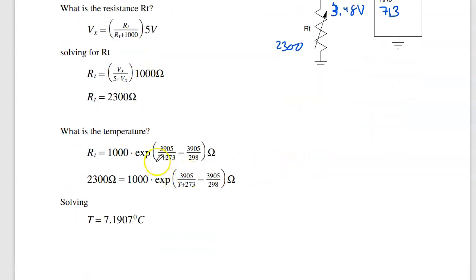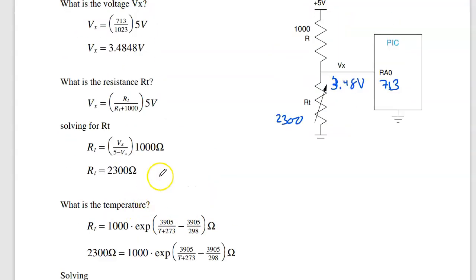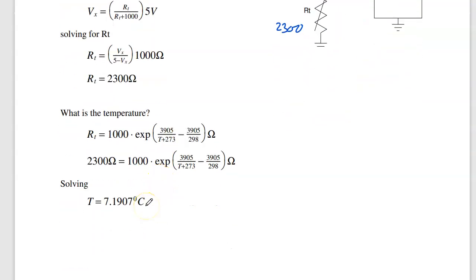If this is a thermistor, I know the R is 2300 ohms. Solved backwards for T, I get 7.19 degrees Celsius. So again, the PIC is a voltmeter. It's an ohmmeter. It's a temperature sensor.